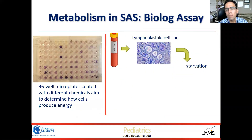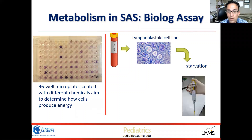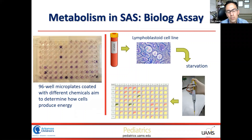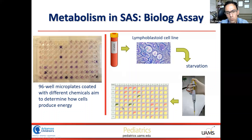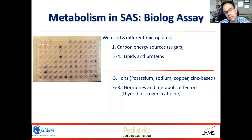Once we have the cells, we starve them — we deprive them from nutrients so they're super hungry and ready to eat. We then plate them into the wells, and the computer analyzes the color and tells you how much energy was produced. Each curve corresponds to each well, showing the energy produced. In this study we started with eight different plates.